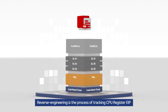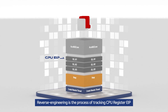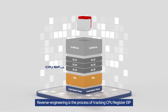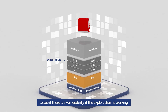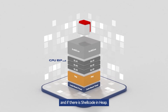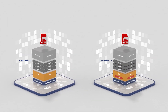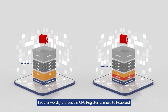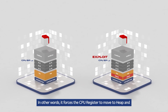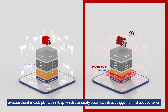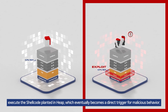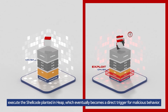Let me explain in more detail. Reverse engineering is the process of tracking CPU register EIP to see if there is a vulnerability, if the exploit chain is working, and if there is shellcode in HEAP. In other words, it forces the CPU register to move to HEAP and execute the shellcode planted in HEAP, which eventually becomes a direct trigger for malicious behavior.